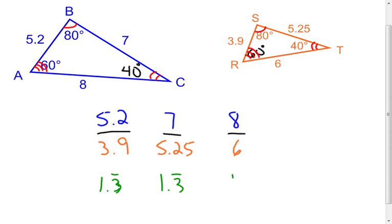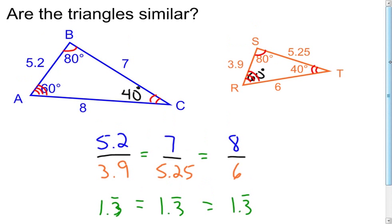And this one also comes out to be 1.3 repeating, which tells me those are easy enough for me to tell they're equal. These are equal, which tells me that my sides are proportional. My corresponding angles are congruent. Are these two triangles similar? Yes. These two are. I checked all my corresponding angles to be congruent, and I've checked my corresponding sides to be proportional.